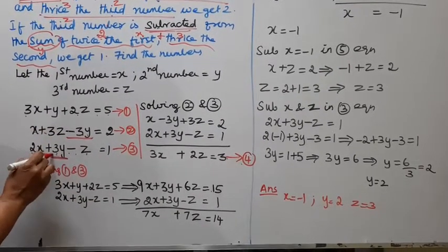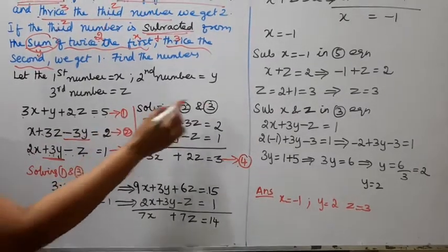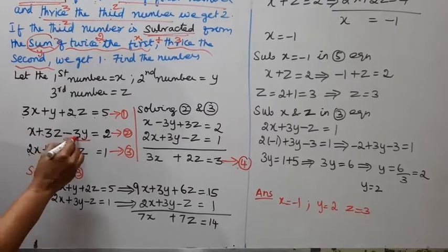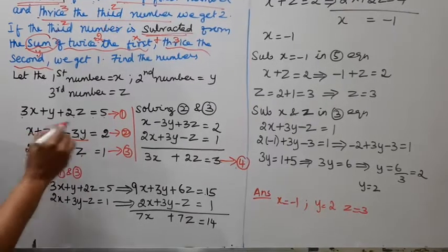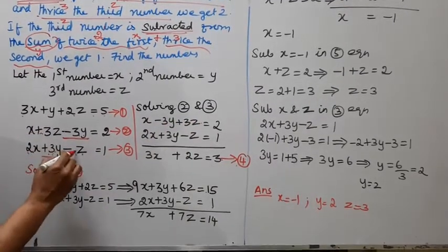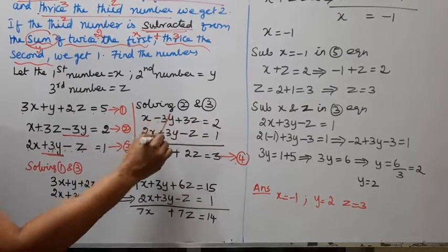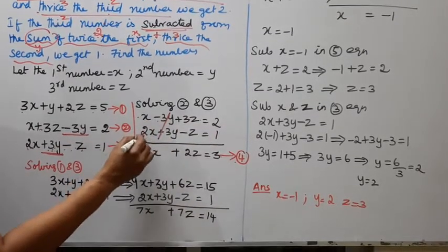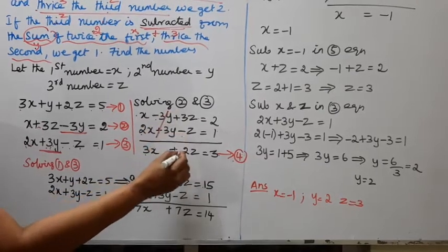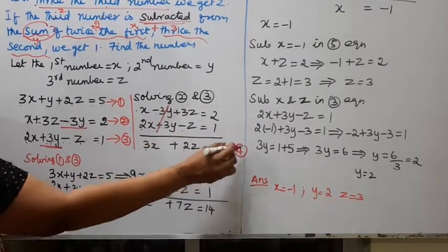Solving equations 2 and 3: equation 2 is x - 3y + 3z = 2, equation 3 is 2x + 3y - z = 1. Since minus 3y and plus 3y cancel, we get: 1x + 2x = 3x, 3z - 1z = 2z, and 2 + 1 = 3. This gives the 4th equation.